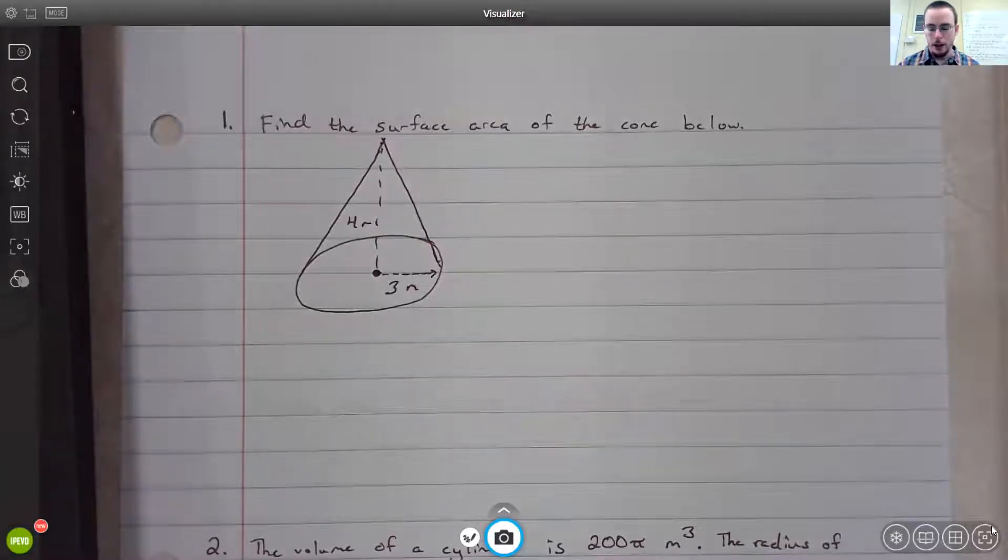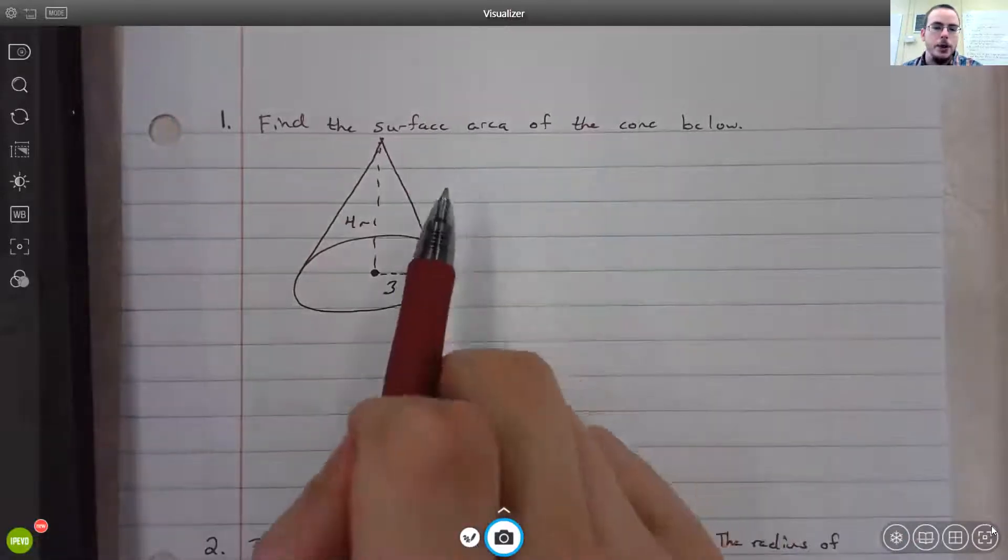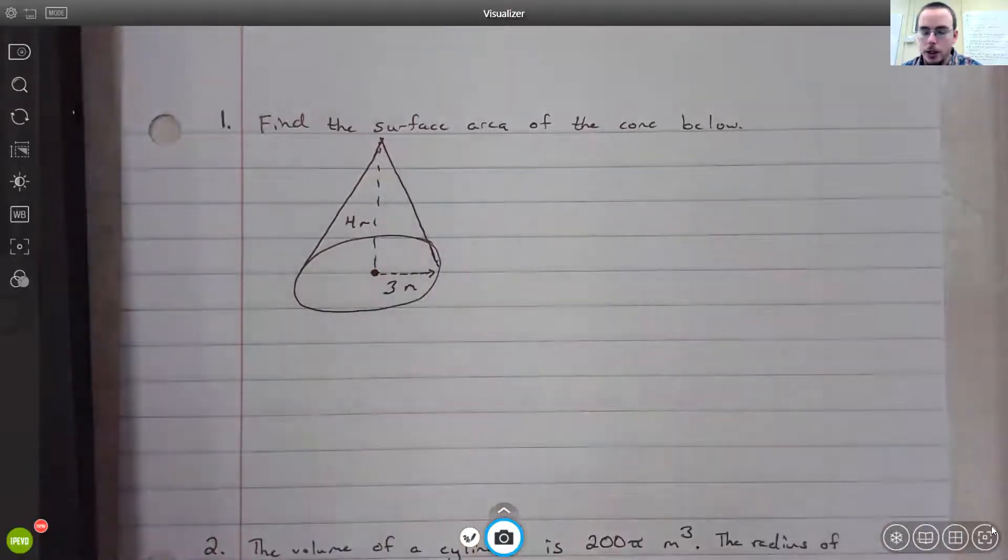We're going to look at a few example problems. Number one says to find the surface area of the cone below. I'm assuming you know how to get to the formula sheet and everything else. It's on the Google Classroom page at the very top under the classwork tab.